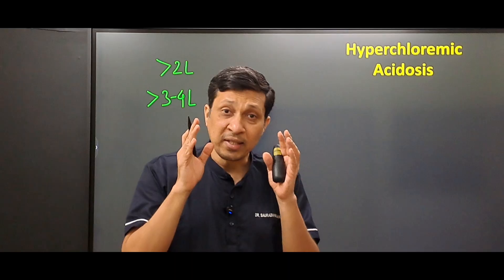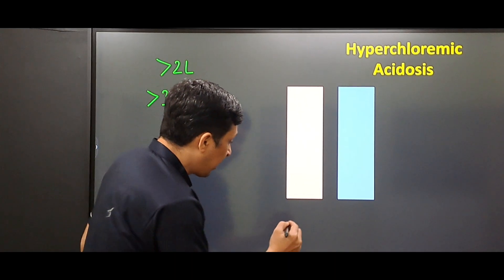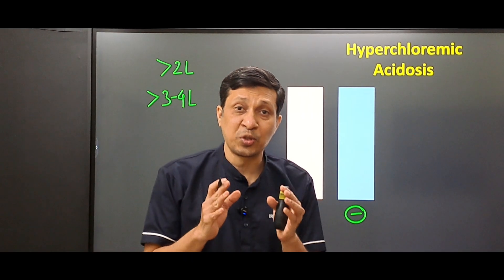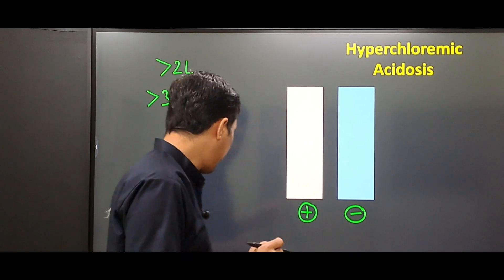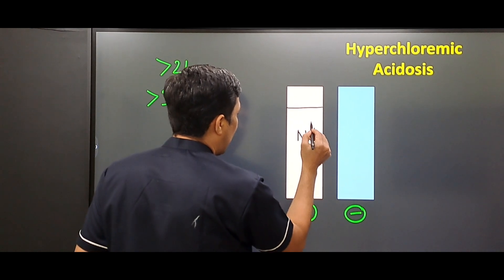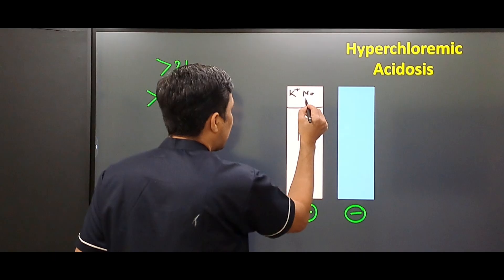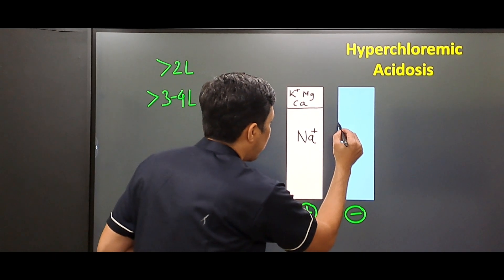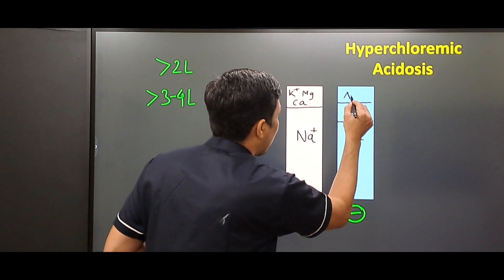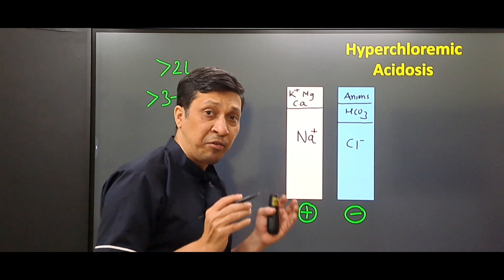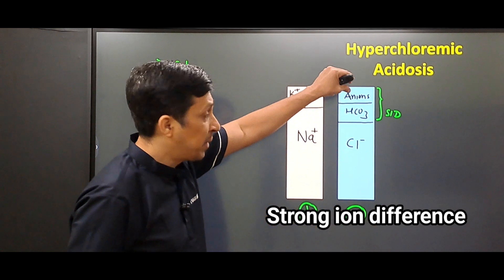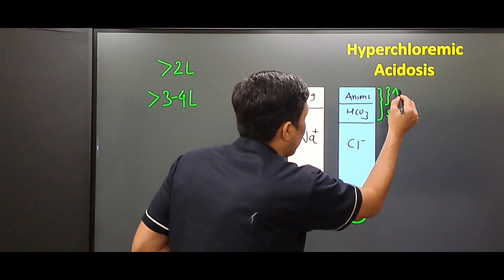We will see with the help of Stewart's approach what hyperchloremic acidosis is. In the patient's plasma, the total number of positive ions and negative ions are always equal to maintain electrochemical neutrality. The main positive ion is sodium, with others like potassium, magnesium, and calcium. The main negative ions are chloride and bicarbonate, along with other unmeasured anions. When we subtract chloride from the positive ions we get the strong ion difference, and the unmeasured anions form the anion gap.